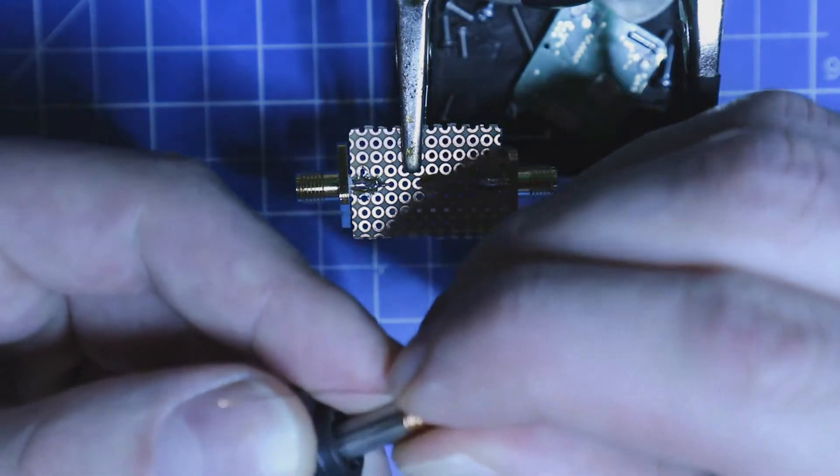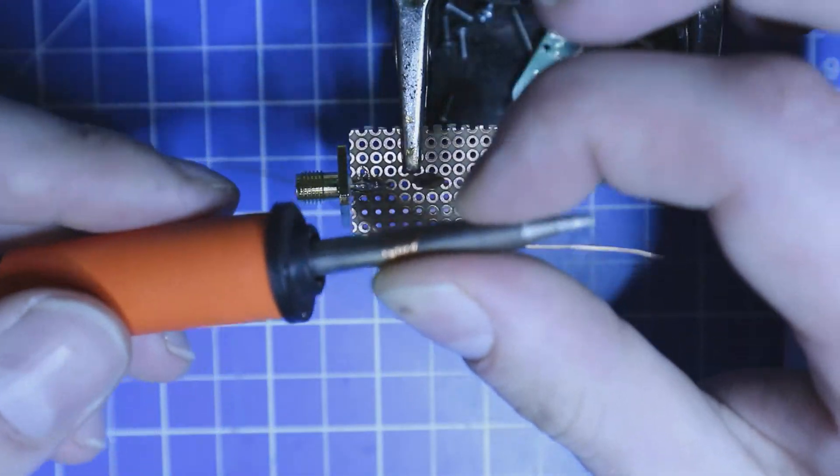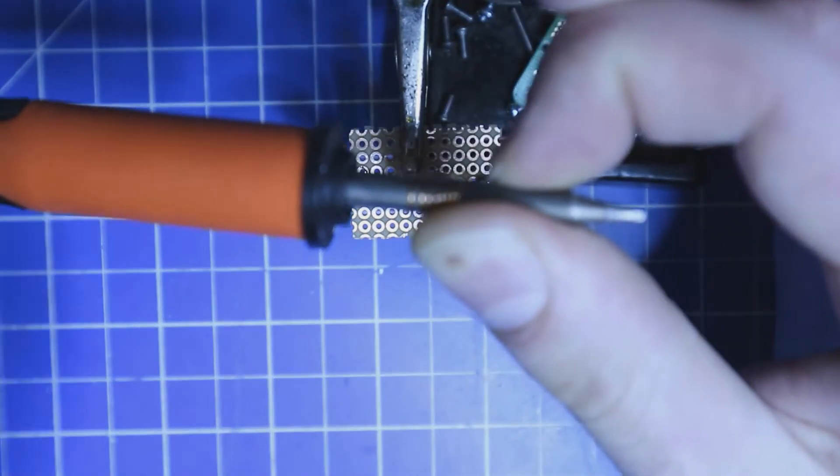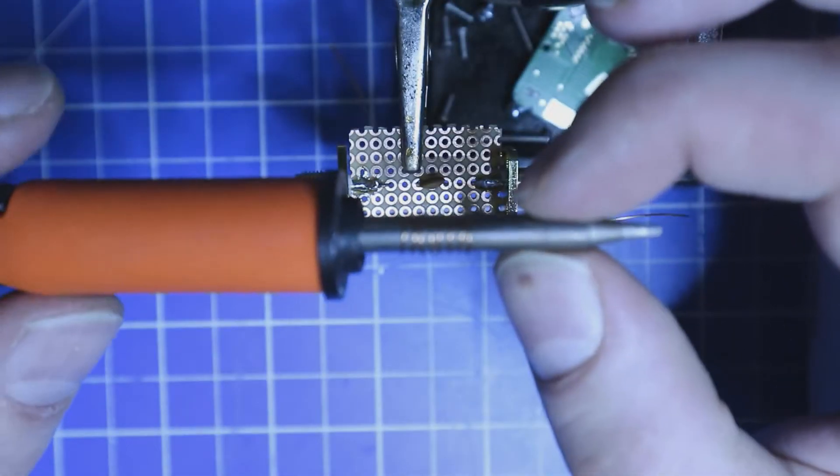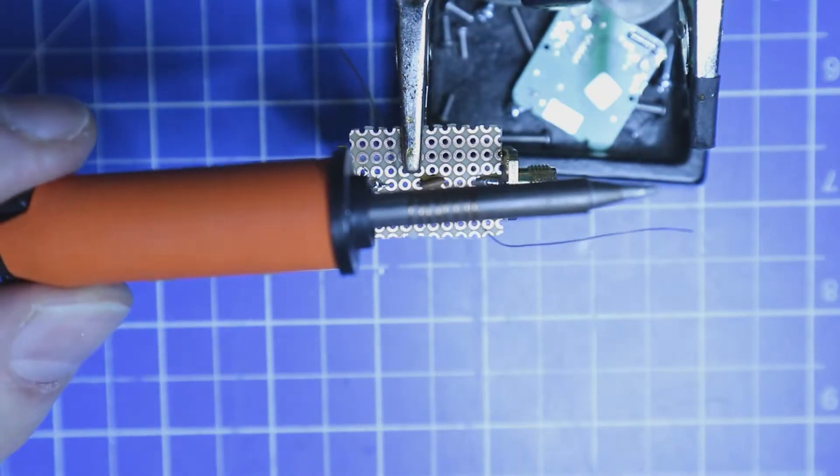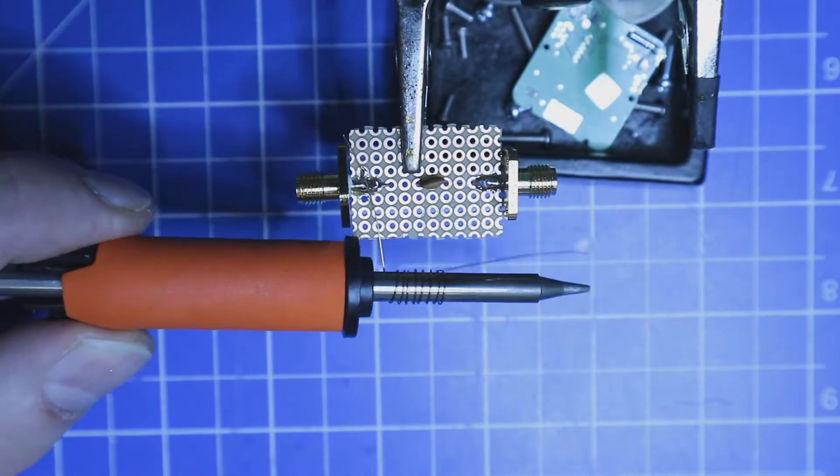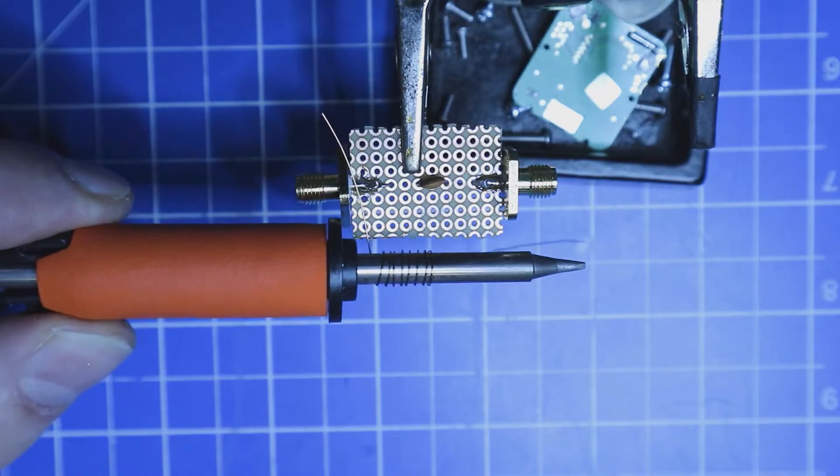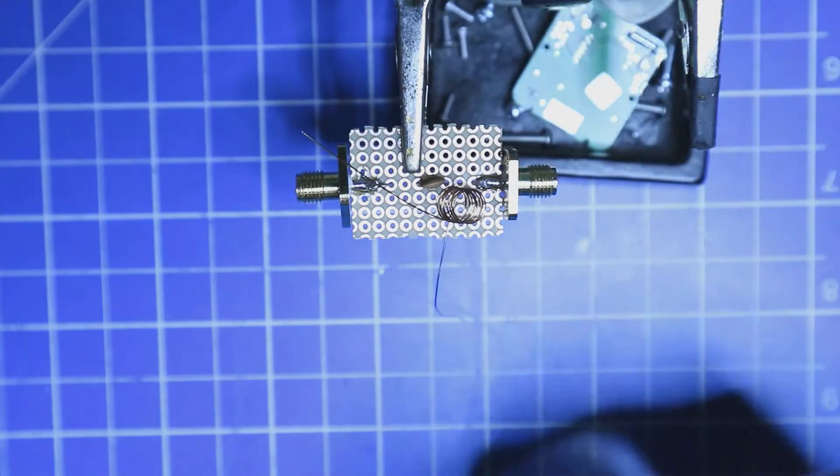You could surely use some smaller diameter part here because the spring tension of the wire will make it a little bit bigger. Here we have our coil now.